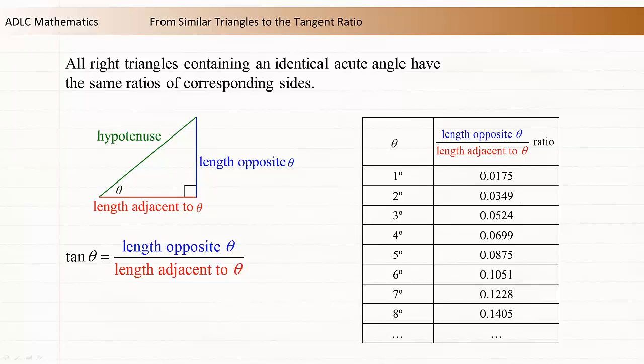This ratio is called the tangent ratio. Notice that the tangent ratio includes two short sides of the triangle. The longest side, which is always across from the right angle, is called the hypotenuse and is not used with the tangent ratio.